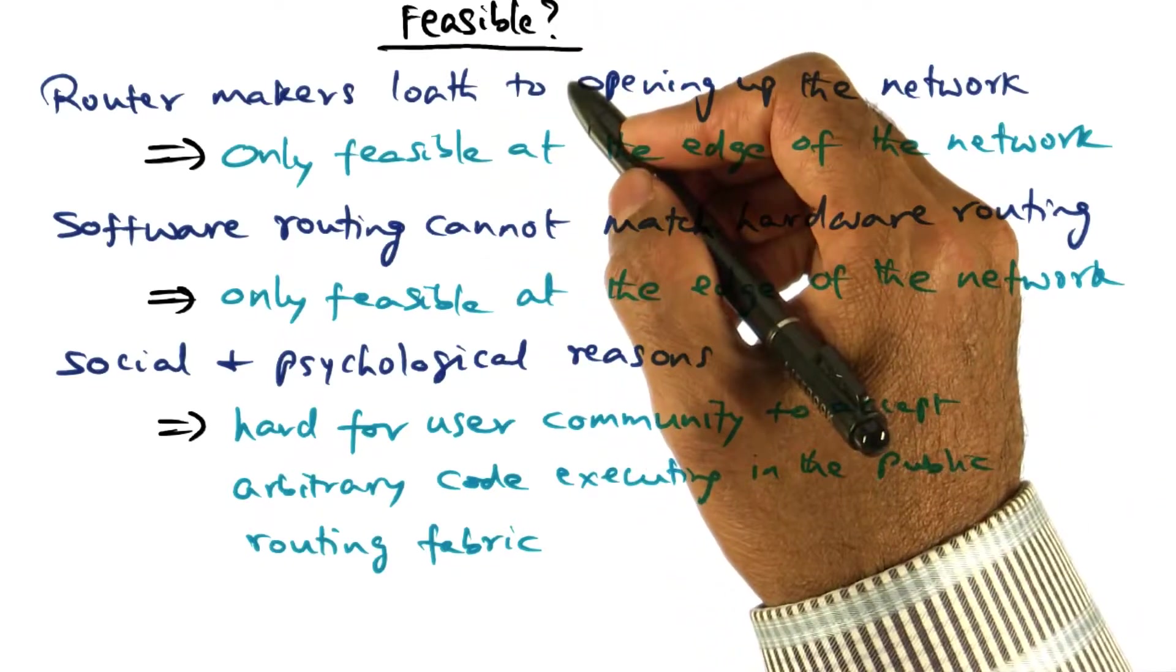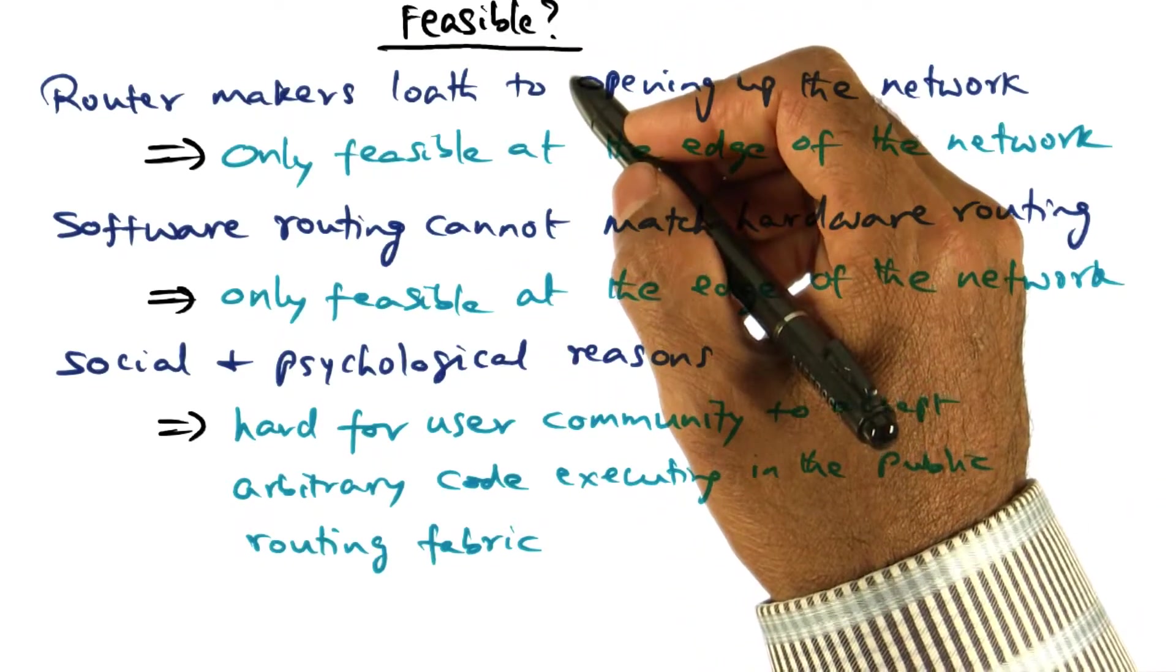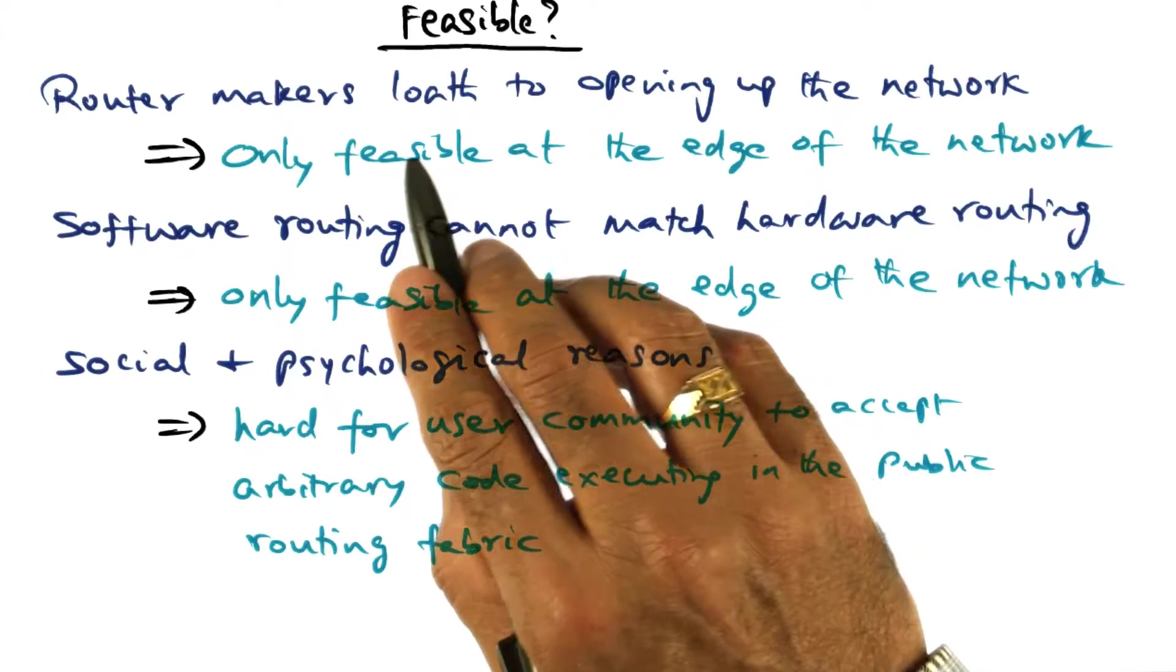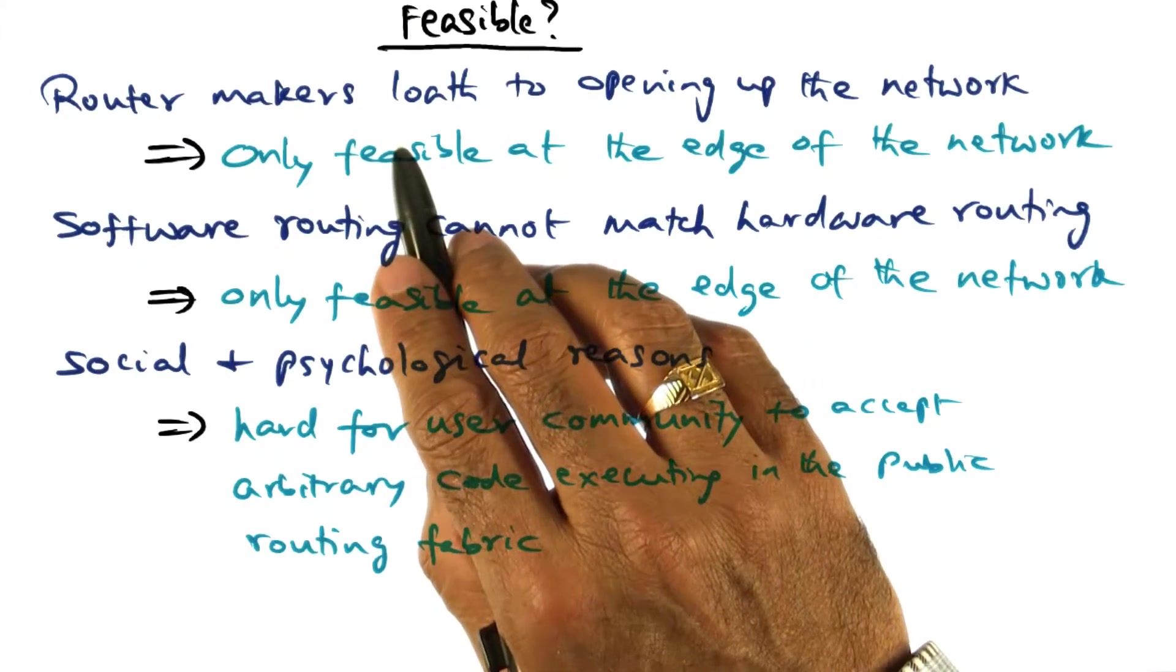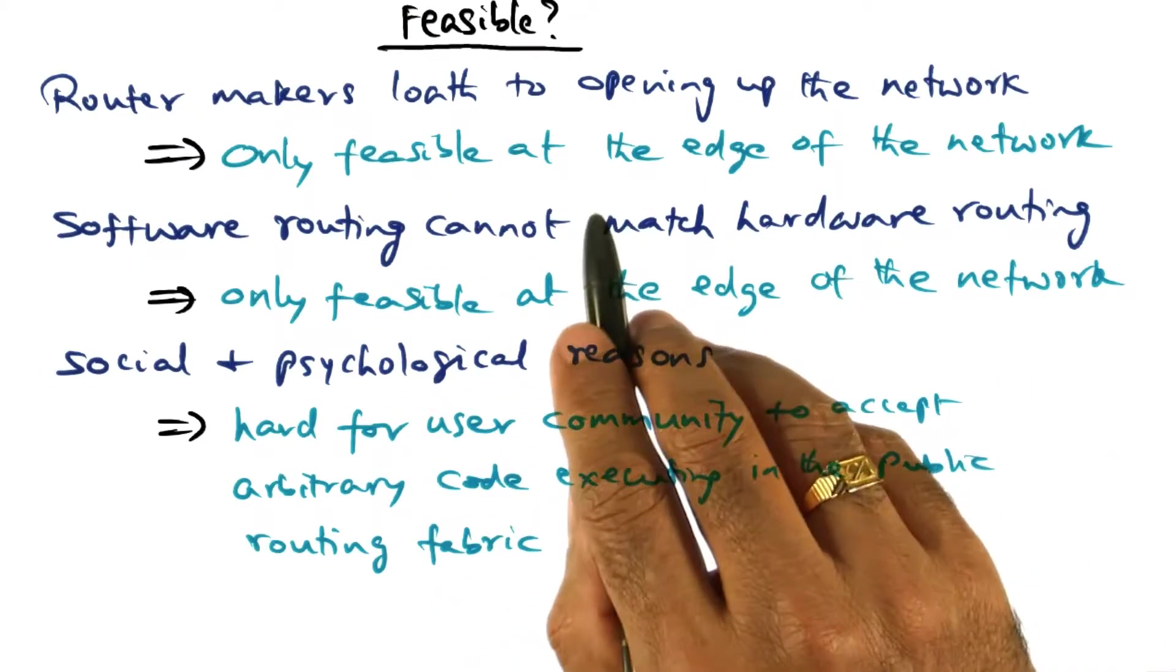So let's talk about the feasibility of the vision of active networks. Reality is, router makers like Cisco are loath to opening up the network.